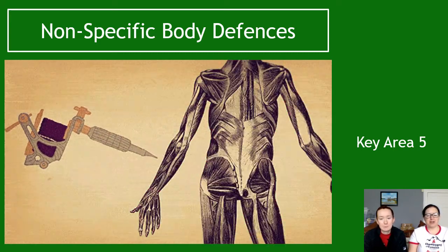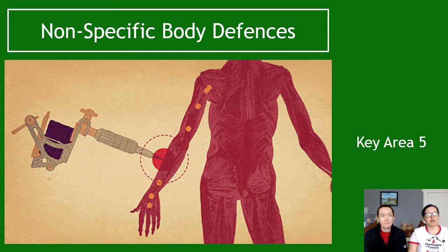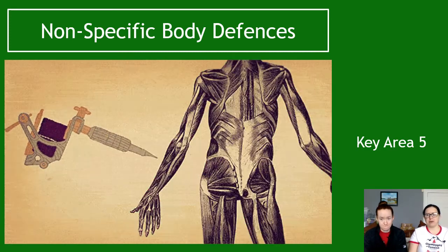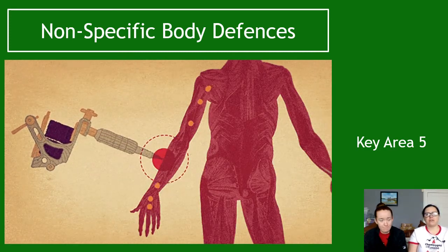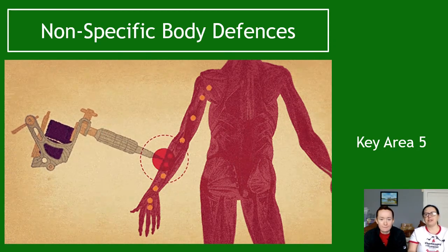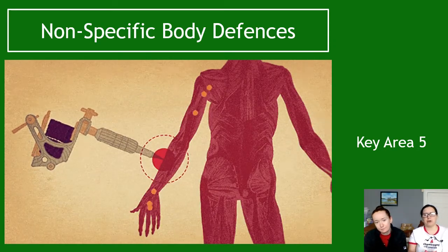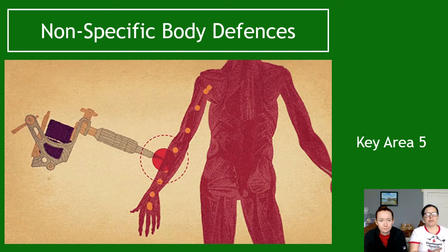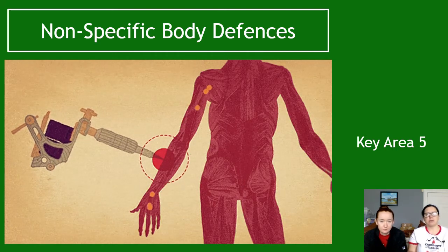Welcome to Key Area 5 of Unit 3, Higher Human Biology. We are in the unit of Neurobiology and Immunology, and this is us starting the Immunology part. Key Areas 1 to 4 were Neurobiology; we are now starting Immunology.